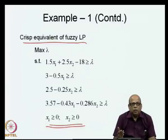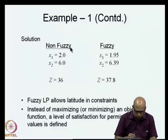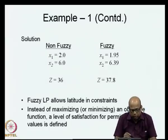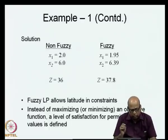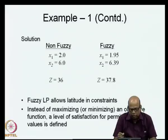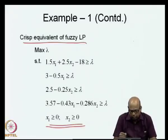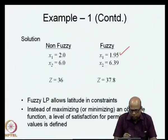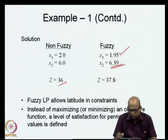When we solve this and compare with the earlier crisp solution: the non-fuzzy solution was x1 = 2, x2 = 6, z = 36. After converting to fuzzy optimization and relaxing constraints, the fuzzy LP solution gives x1 = 1.95, x2 = 6.39, and z = 37.8.